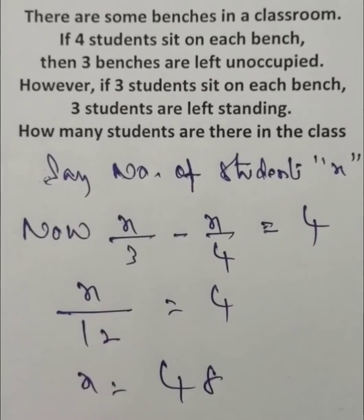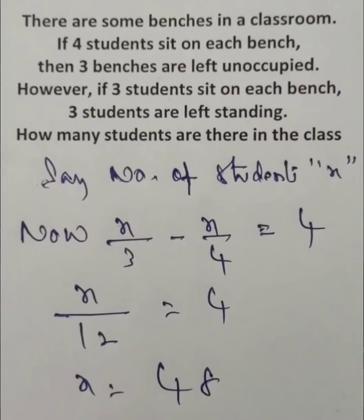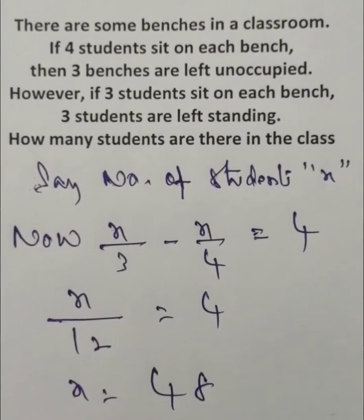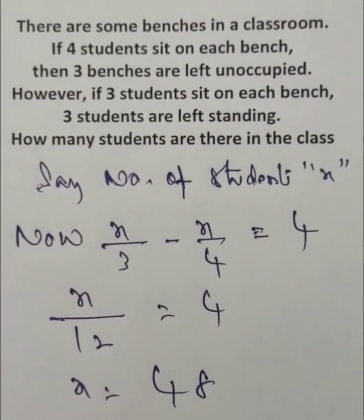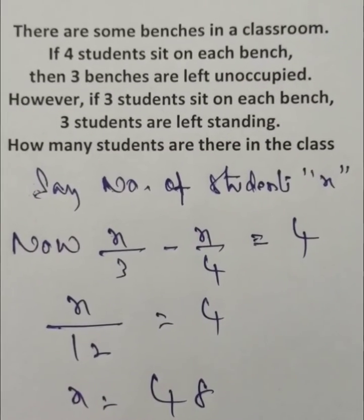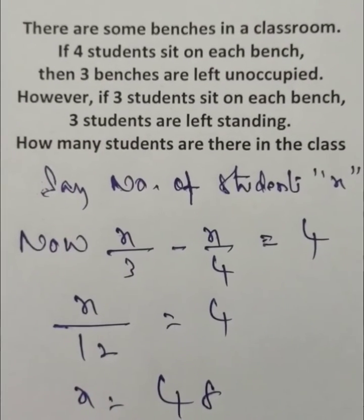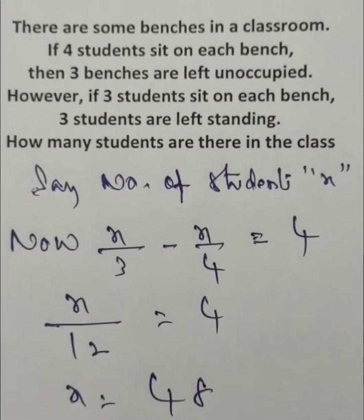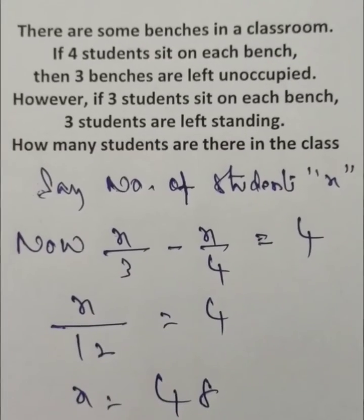Friends, there are some benches in a classroom. If four students sit on each bench, then three benches are left unoccupied — that means three benches are remaining. However, if three students sit on each bench, three students are left standing, meaning one more bench is required. So if three students sit on each bench, one bench is required because three students are left standing.